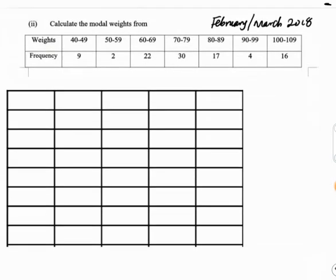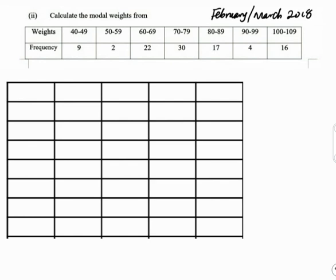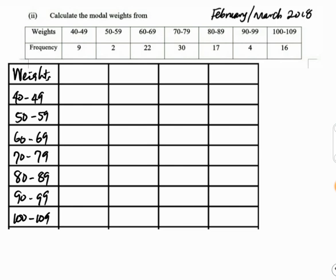Now let's calculate the median. We set up the table with the class intervals. The next step is to find the class boundaries. Remember from our earlier video on understanding the statistical table: we subtract 0.5 from the lower limit and add 0.5 to the upper limit. So the class boundaries are: 39.5–49.5; 49.5–59.5; 59.5–69.5; 69.5–79.5; 79.5–89.5; 89.5–99.5; 99.5–109.5.